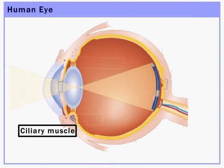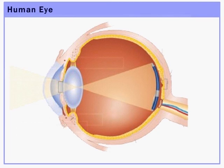There is a ring-shaped muscle attached to the iris, called the ciliary muscle. Its contraction and relaxation controls the shape of the lens. This is the macula,